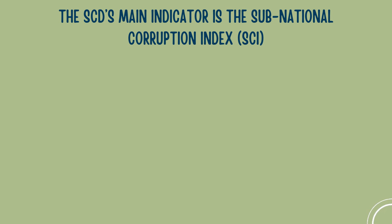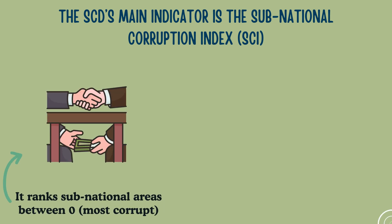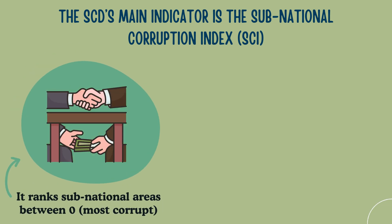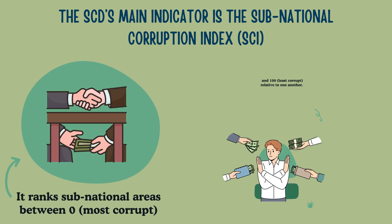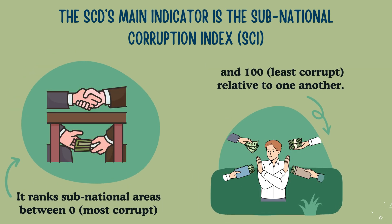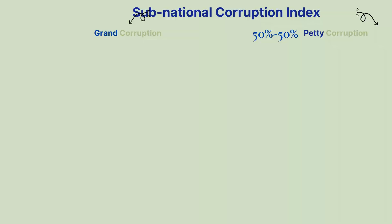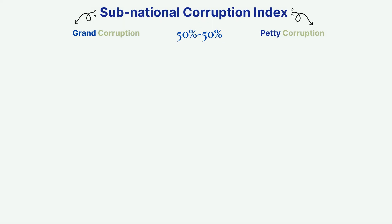The SCI scores subnational areas on their relative corruption between zero, most corrupt, and 100, least corrupt. The SCI is a simple average of the grand corruption perceptions and petty corruption experiences indices, which have both been developed independently.